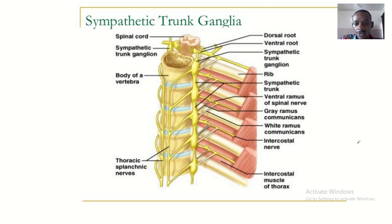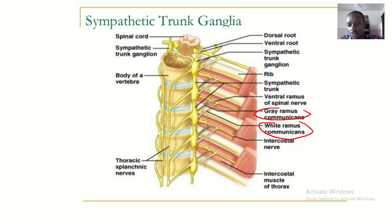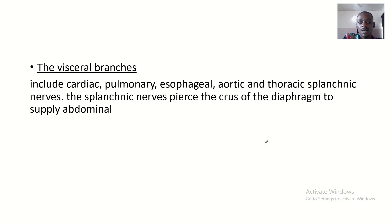The gray rami communicantes are proximal — they are proximal and they come before the white rami communicantes. That is the difference between these two branches of the sympathetic trunk.